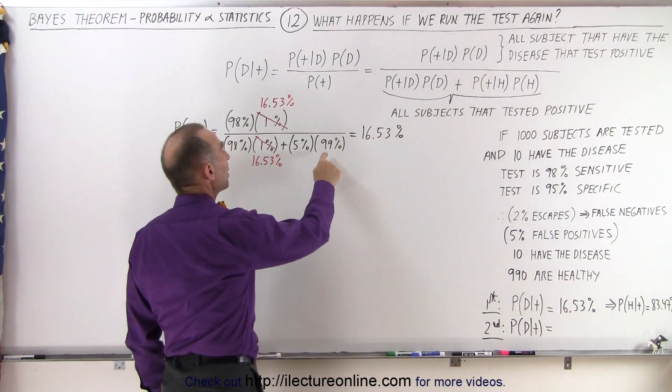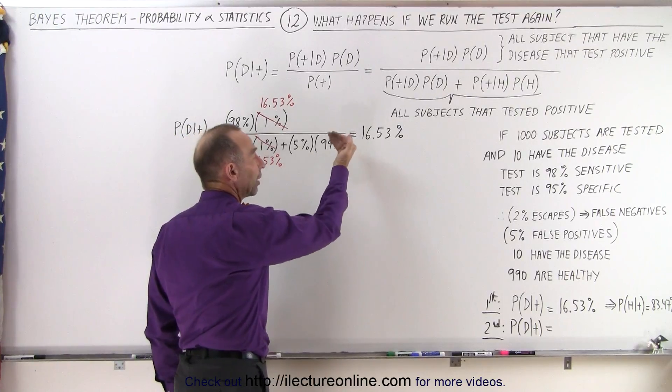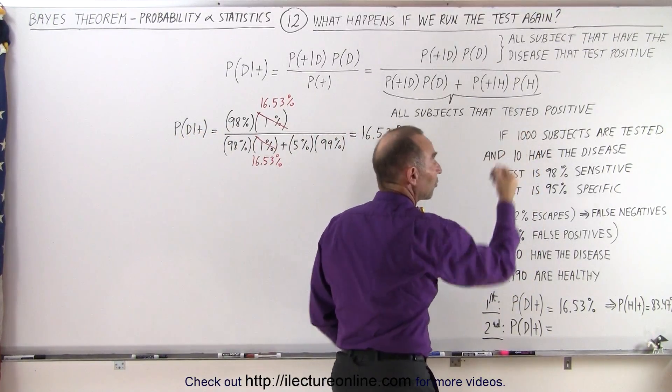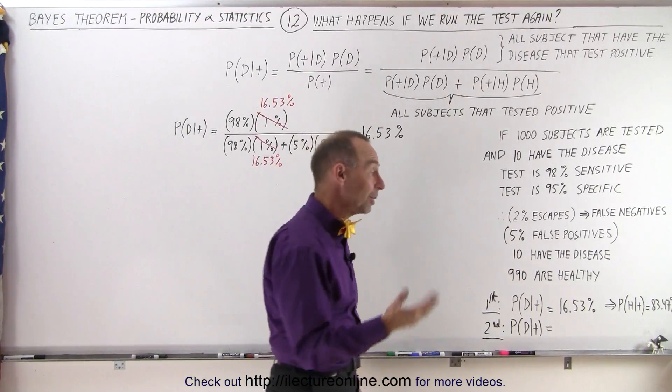But the number of people that are now expected to be healthy will now drop. 990 out of a thousand in the initial sample would be healthy. But now,